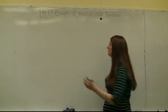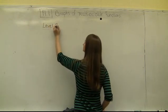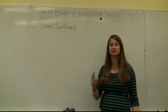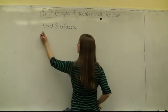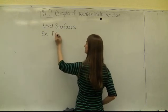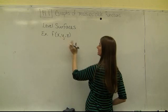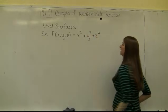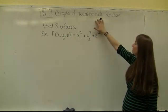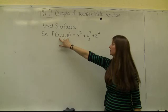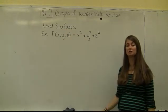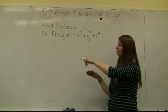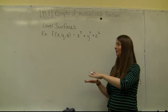The final topic is level surfaces. We've talked about graphs of multivariable functions with two inputs, but now consider what happens when a point in ℝ³ is the input. For example, the function f(x, y, z) = x² + y² + z². The tool for analyzing such functions is the idea of level surfaces, which are directly analogous to level curves — they trace out a surface for a given constant output value.